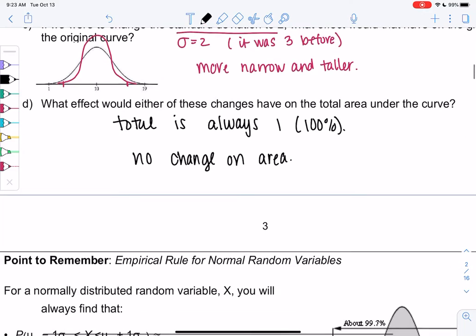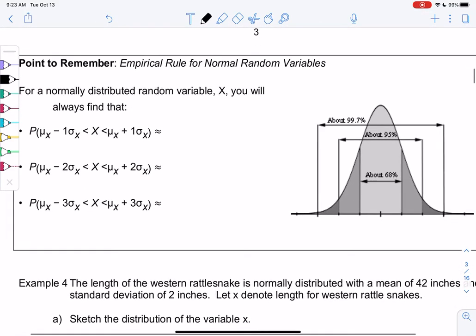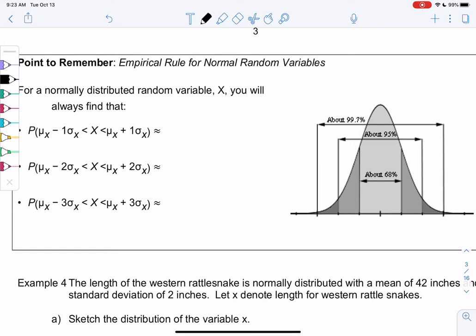Alright, so let's maybe refresh on that empirical rule. We covered this a couple chapters ago. So we learned that about 68% was within one standard deviation. So that'll be 1 in each direction. Again, we're considering the middle to be the mean, and then we go 1 standard deviation in each direction. So we can subtract 1 and we can add 1. And we learned it was about 68%, or 0.68, because probabilities are usually in decimal form.